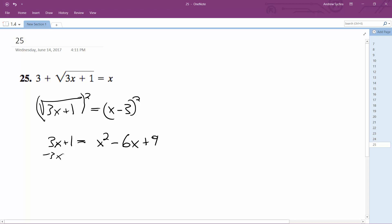I'm going to move these over, so minus 3x and then minus 1. So I get x squared minus 9x plus 8 equals 1.